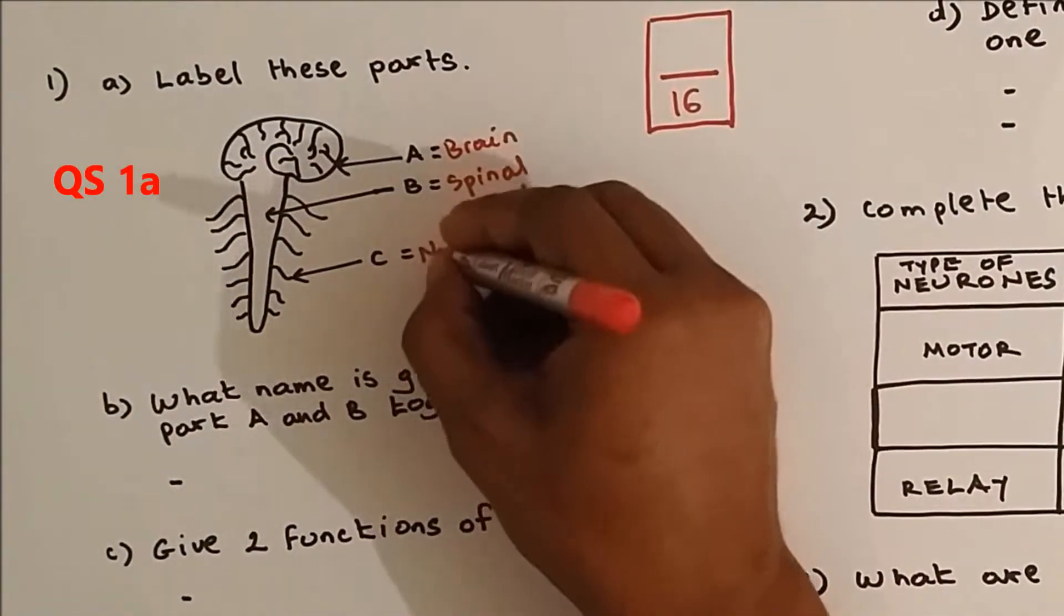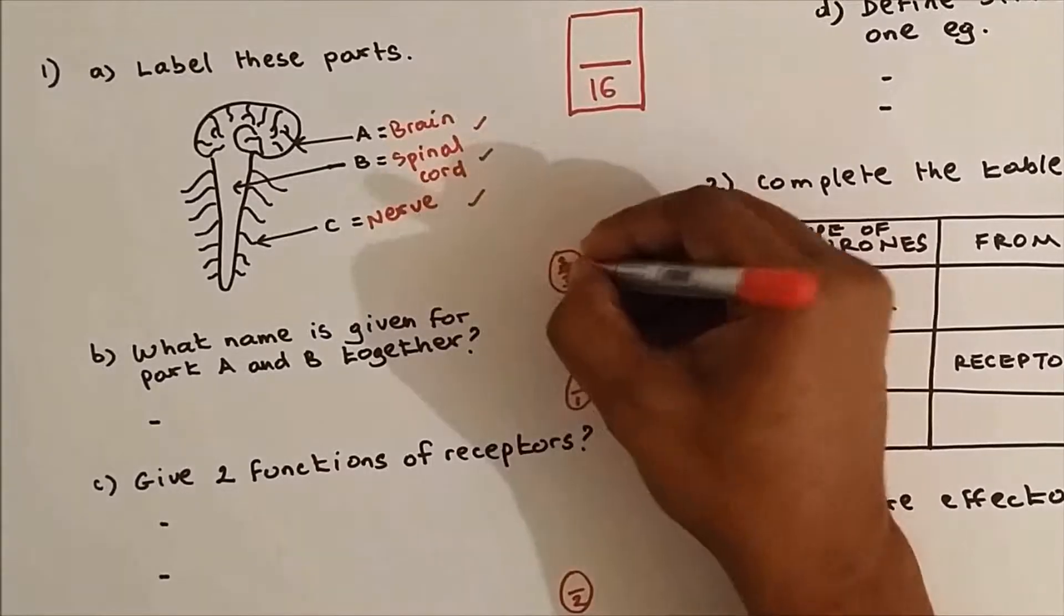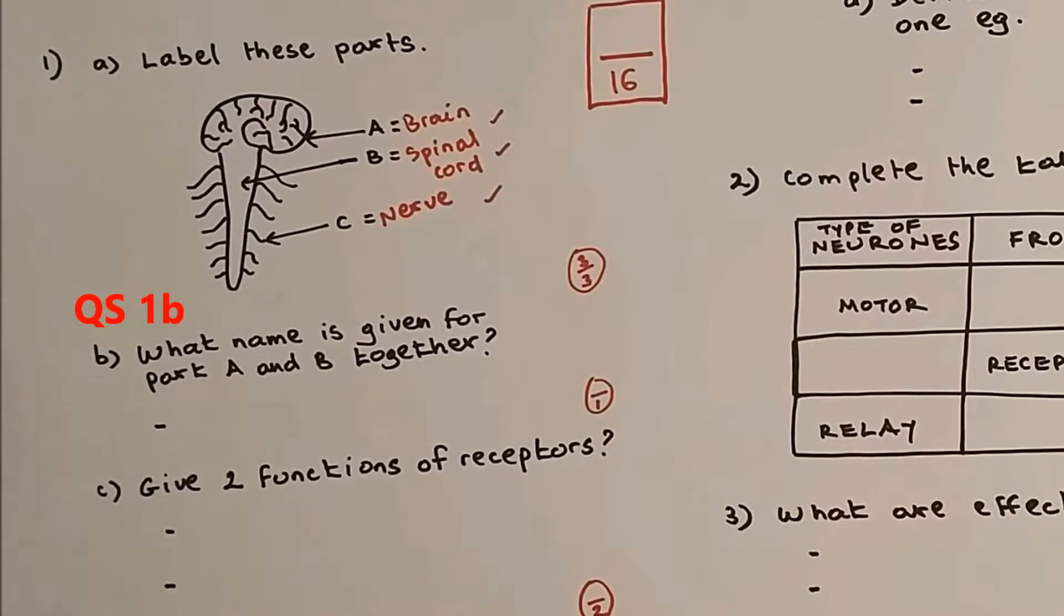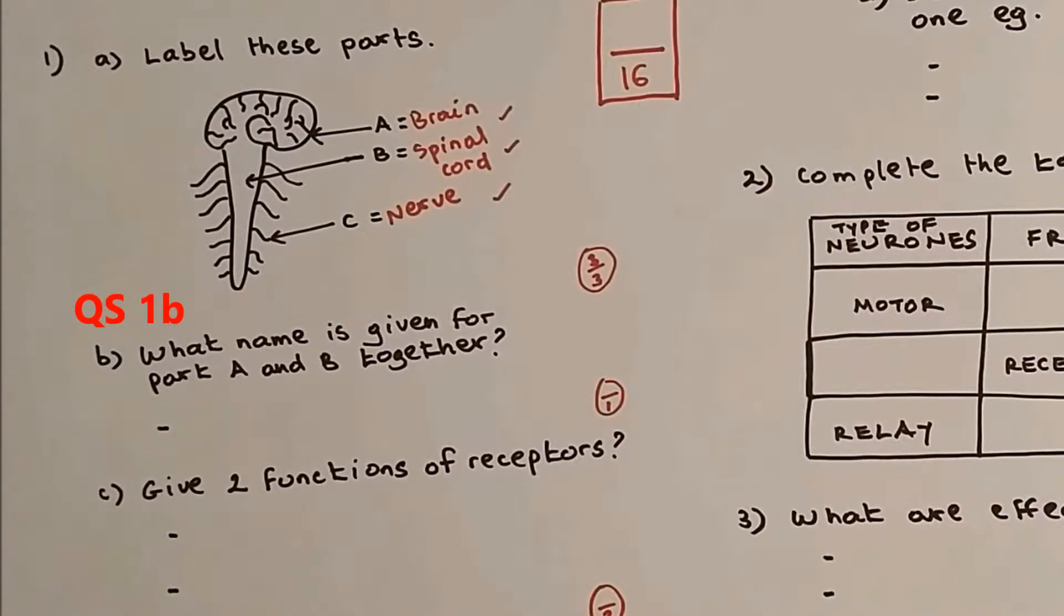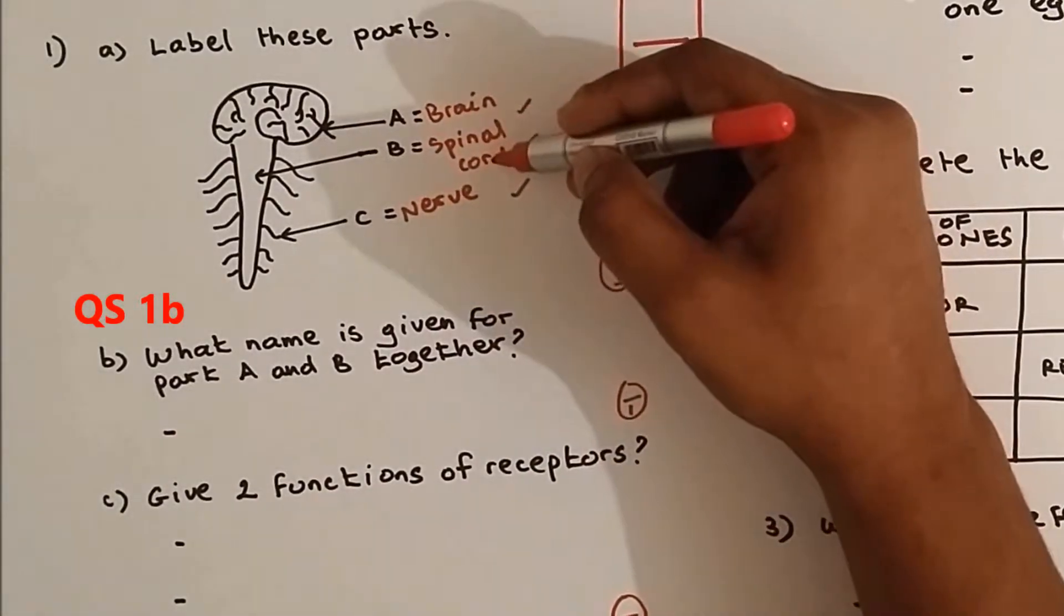And this is the nerve. Nerves are connected to the spinal cord. Three points, so three out of three. Question number 1b: what name is given for parts A and B together? So the brain and the spinal cord together can be called the central nervous system or CNS.